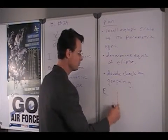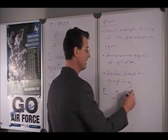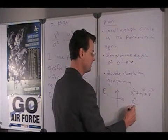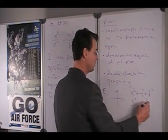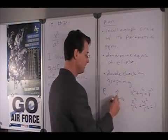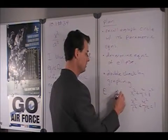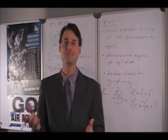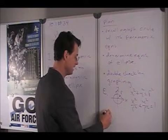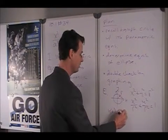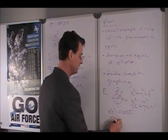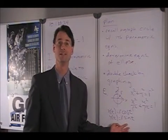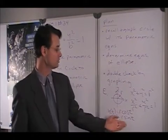If you recall how a circle goes, a circle can be written as x squared plus y squared equals r squared, or dividing through by r squared: x squared over r squared plus y squared over r squared equals 1. That's a circle of radius r in the xy-plane. The relevant parametric equations are simply x of t equals r cosine t, and y of t equals r sine t, with t varying from 0 to 2π.